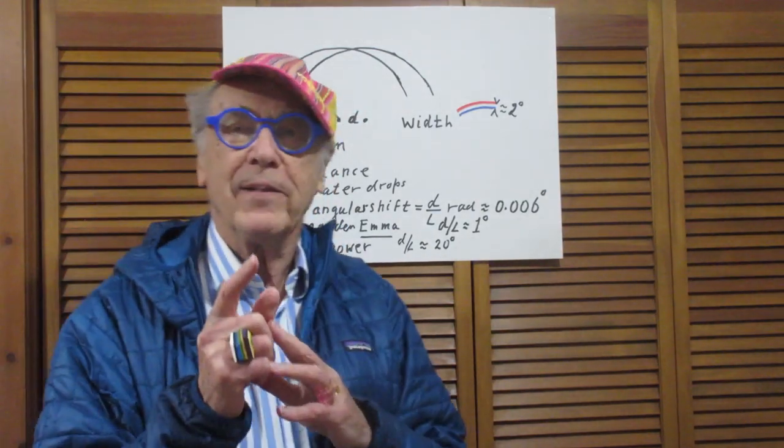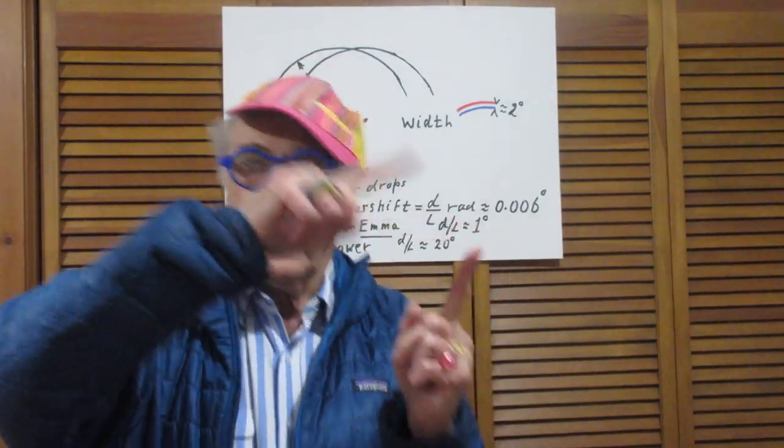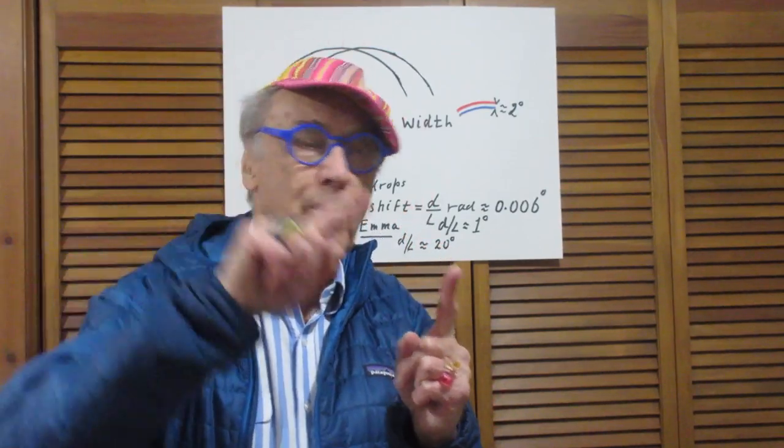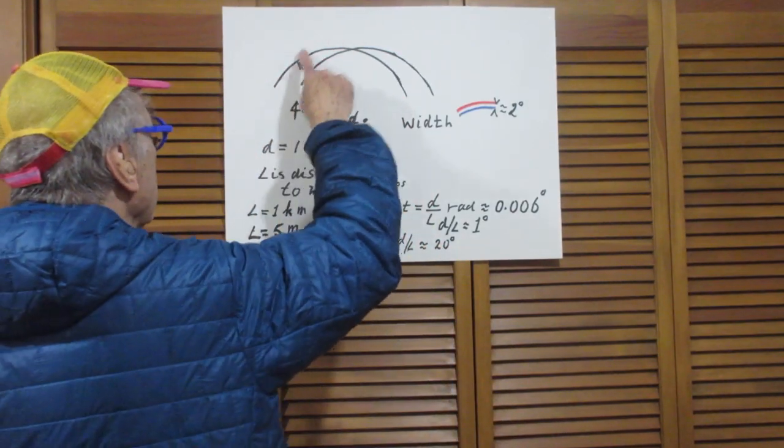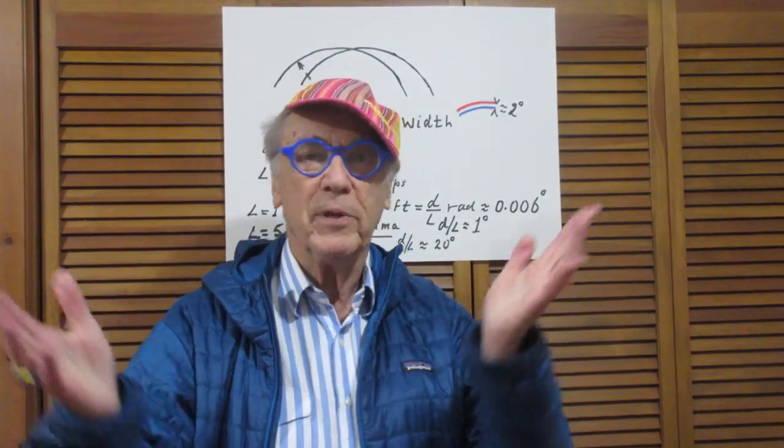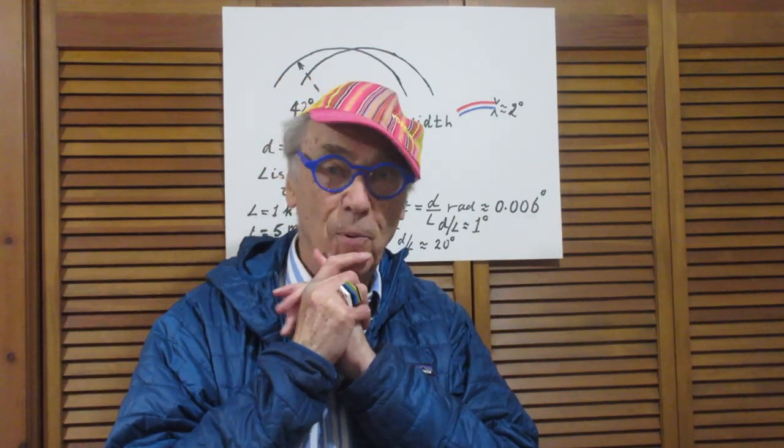And given the fact that the sun was coming in this direction, the bows were for me like this. And there was no rain here and there was no rain here. So I was looking at this part of the bows. So I saw this part and this part, distinctly separated by 20 degrees. And that's the answer to this problem.